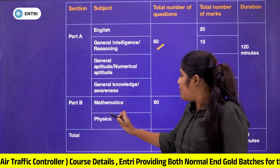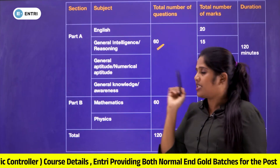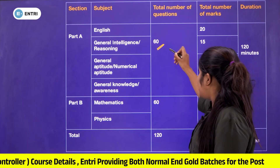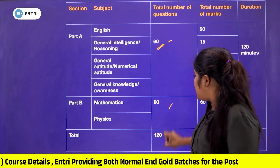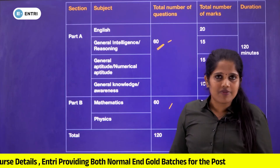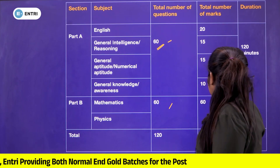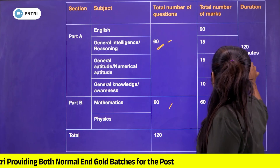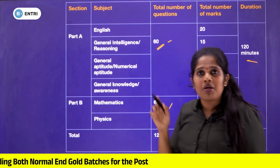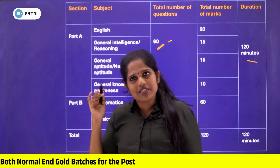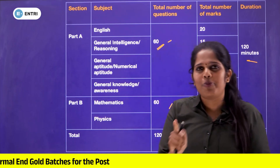Part B is Mathematics and Physics, also 60 marks. So total marks are 60 plus 60 equals 120 marks, with 120 questions in 120 minutes — meaning every question requires 1 minute.